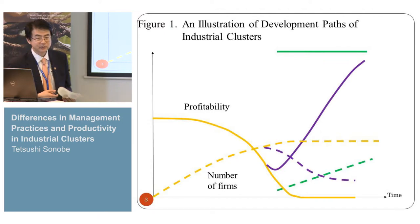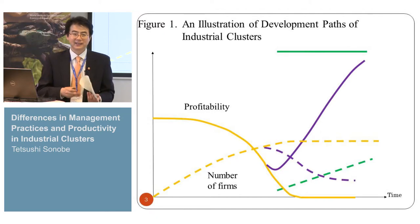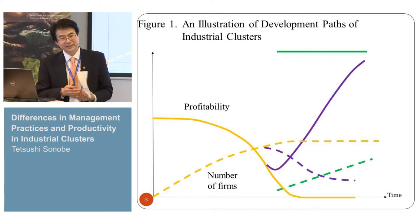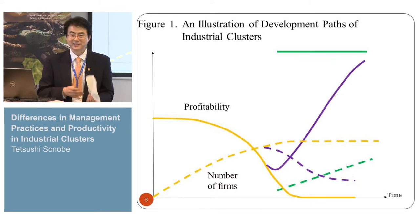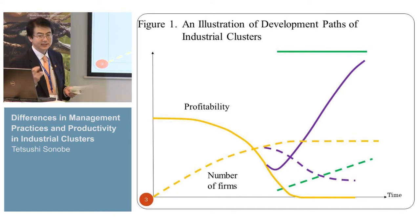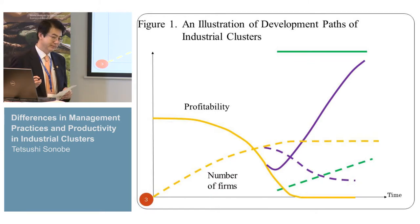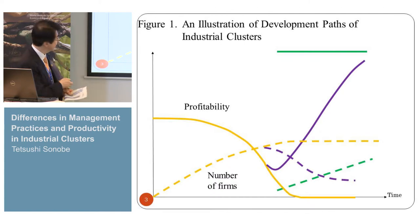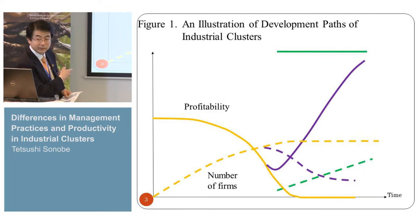Looking at the high profit of the pioneer, there are apprentices, workers, and neighbors who start imitating the business. Then a cluster is formed, and traders come to pick up the products or deliver the materials. So business becomes easier, and the number of producers in this sector increases.